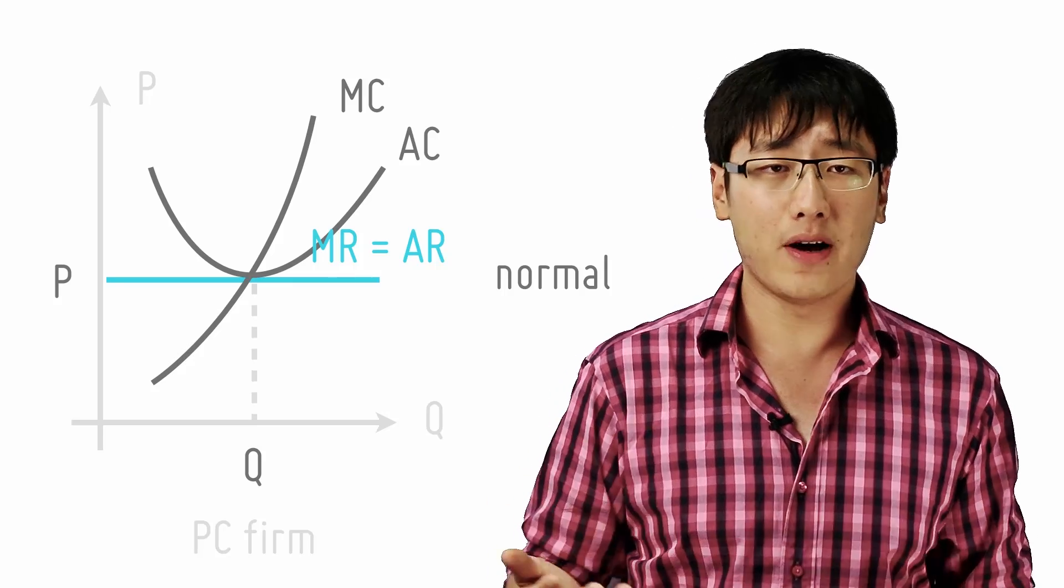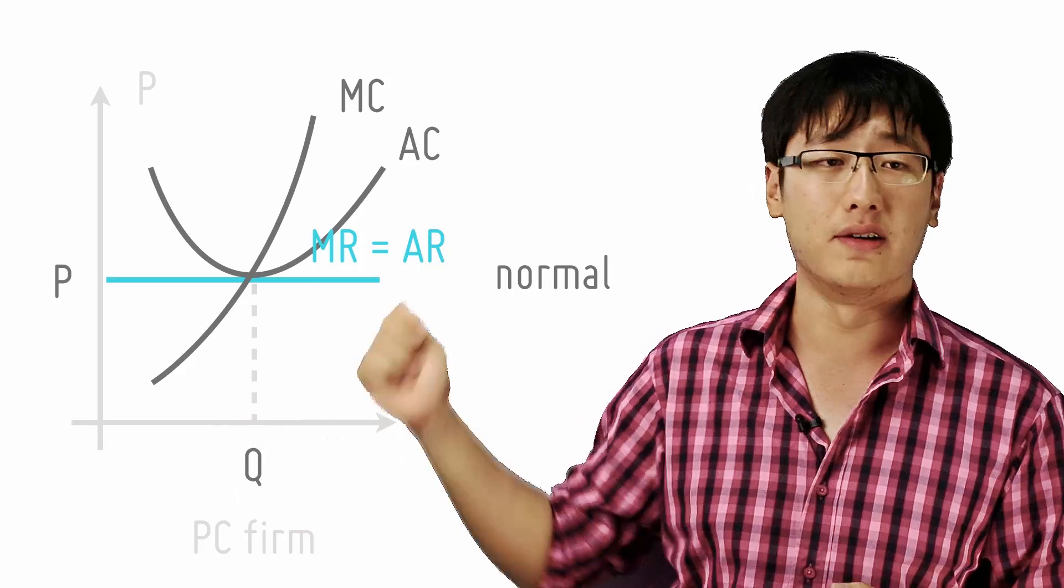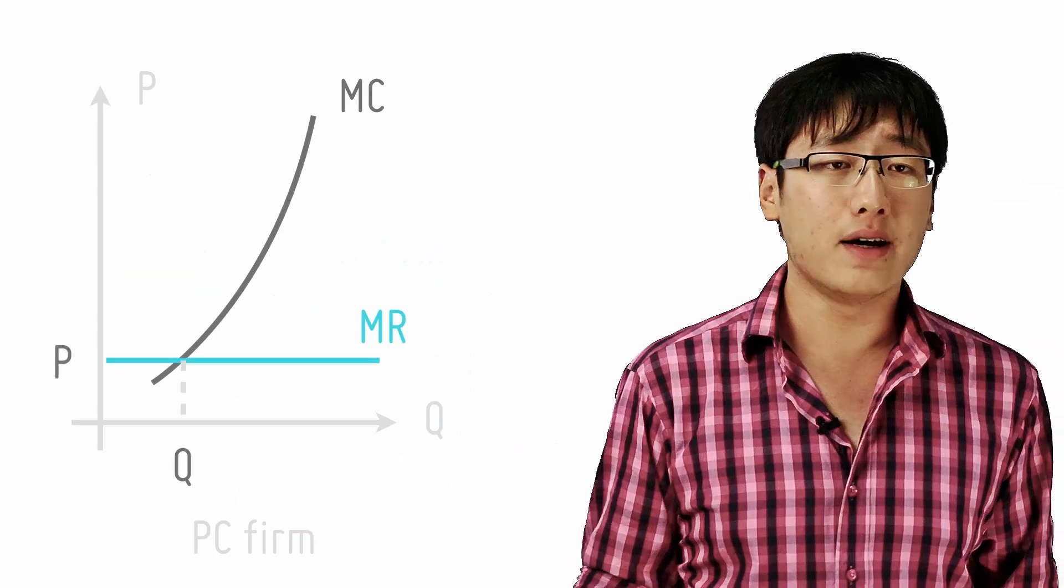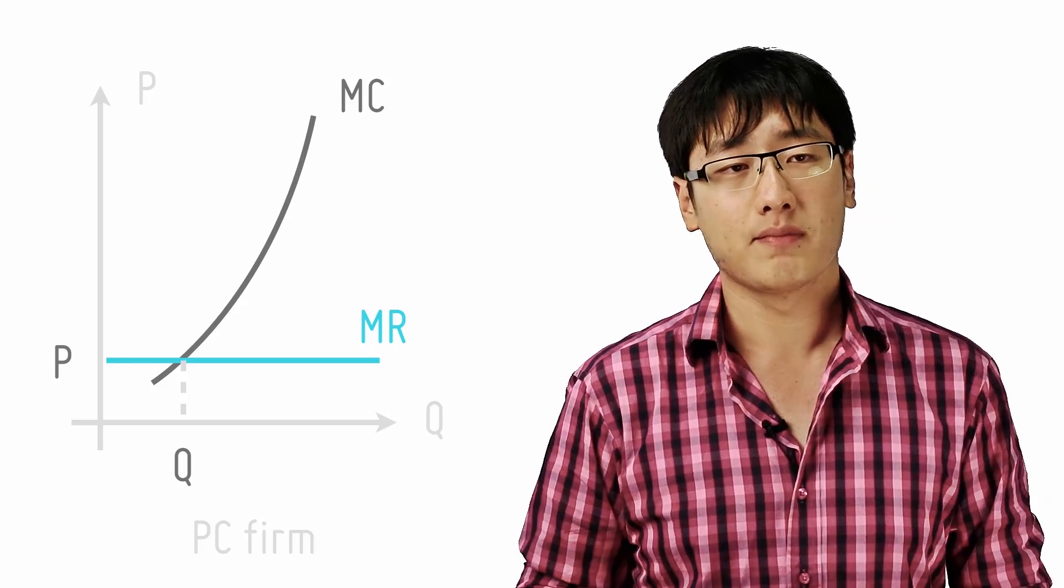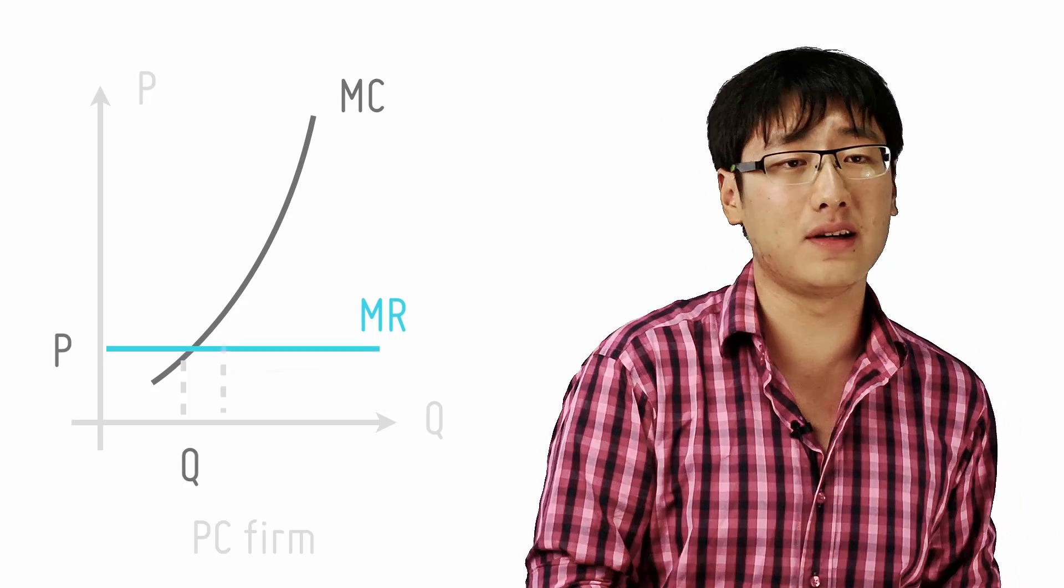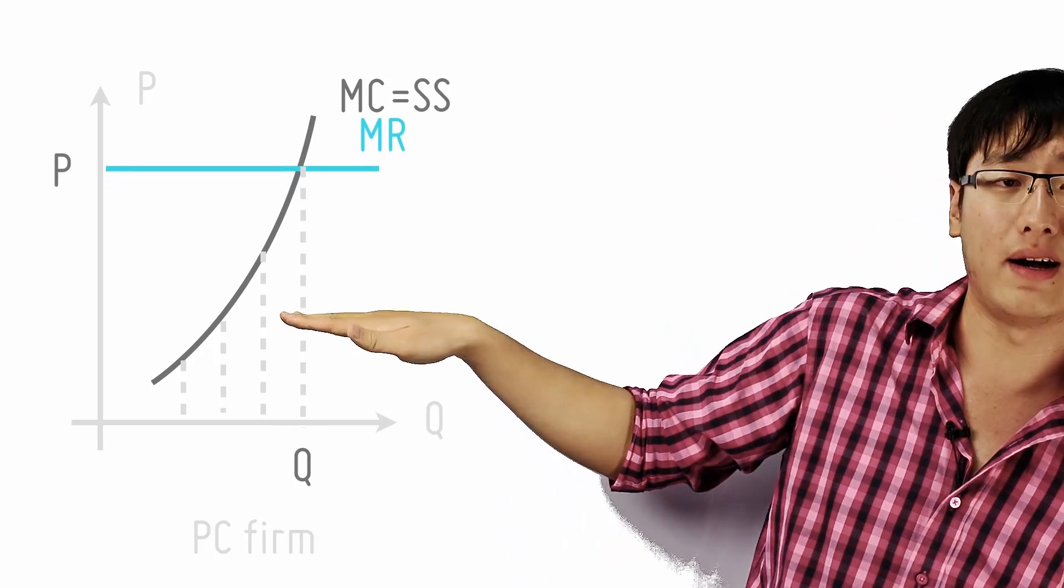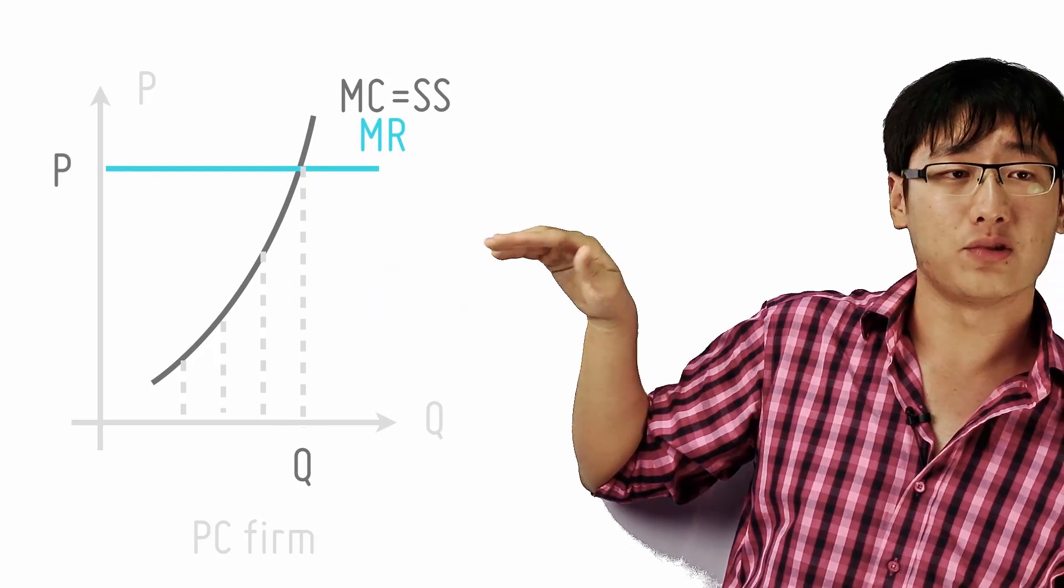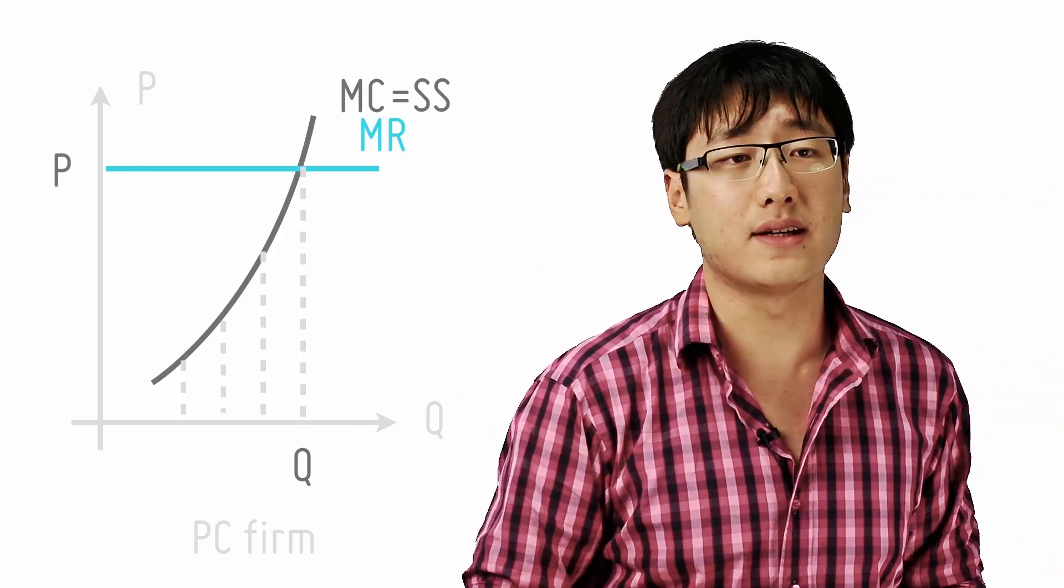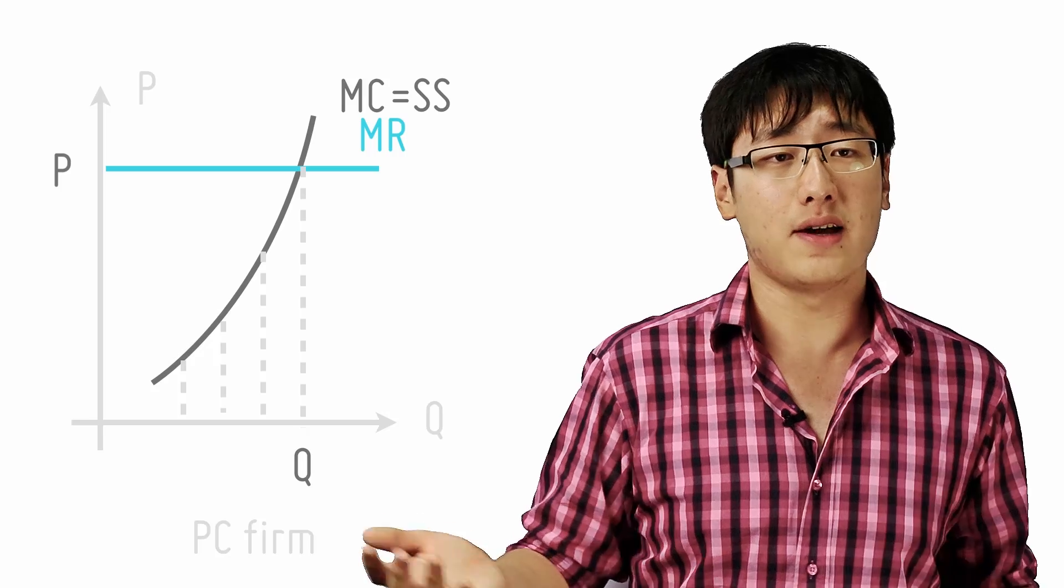In the short run, the firm's supply curve, not the industry's, would be the marginal cost curve. Why? A supply curve shows how much will be supplied at each price. It relates quantity to price. The marginal cost curve relates quantity to marginal cost. But under perfect competition, since your P equals MR and MR equals MC, your quantity is related to the price also by the MC curve. So P is always equals to MC in this case.